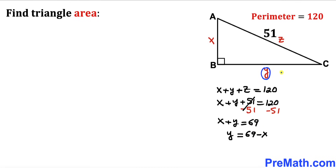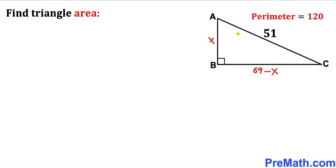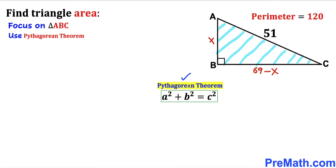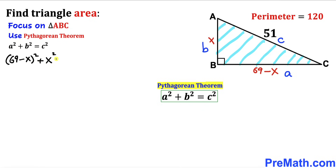We replace y with 69 minus x, so the side lengths of this triangle are x, 69 minus x, and 51. Now our task is to find the value of x. Focusing on right triangle ABC, we apply the Pythagorean theorem: a squared plus b squared equals c squared. In our case, a is 69 minus x and b is x, giving us (69 minus x) squared plus x squared equals 51 squared.